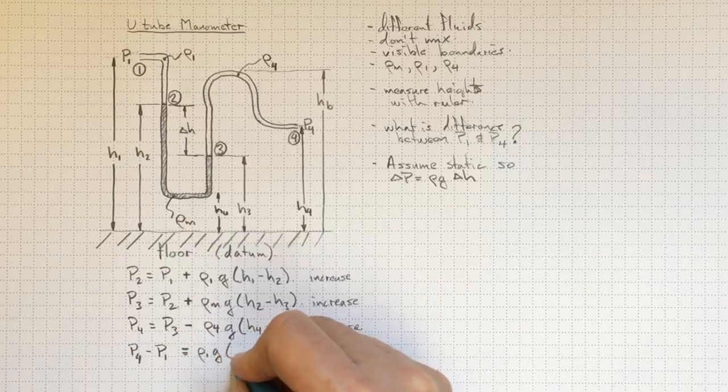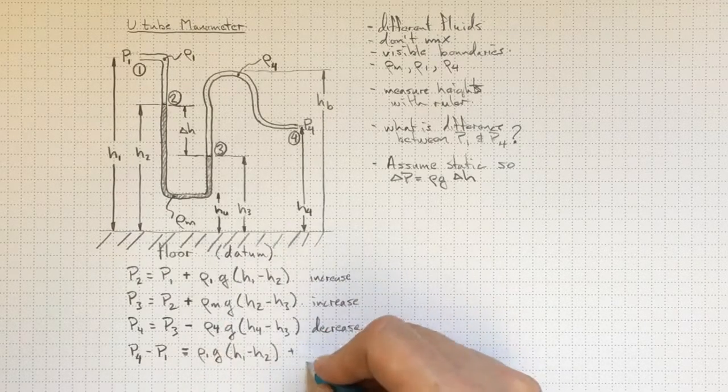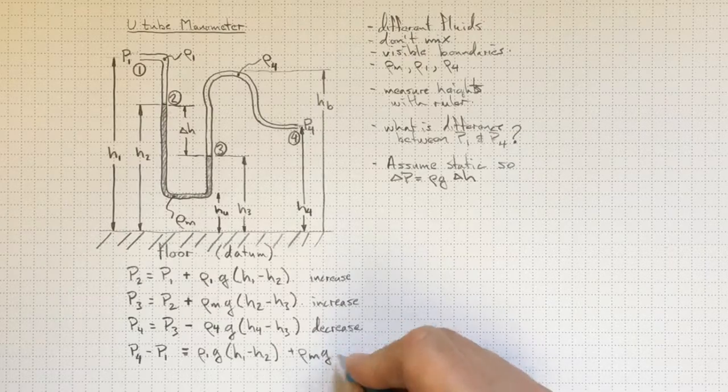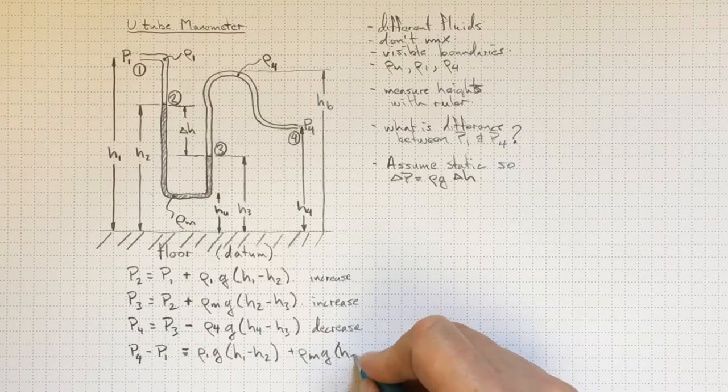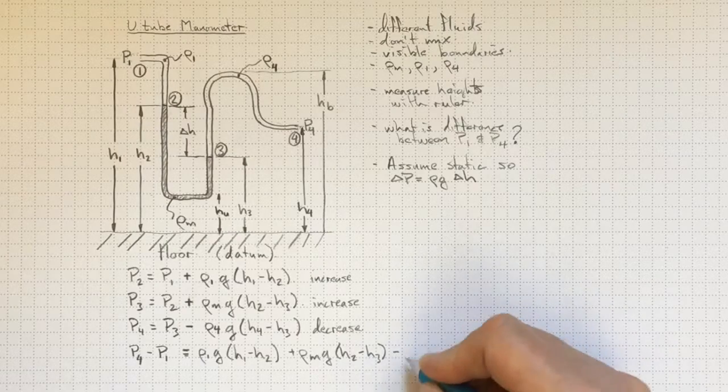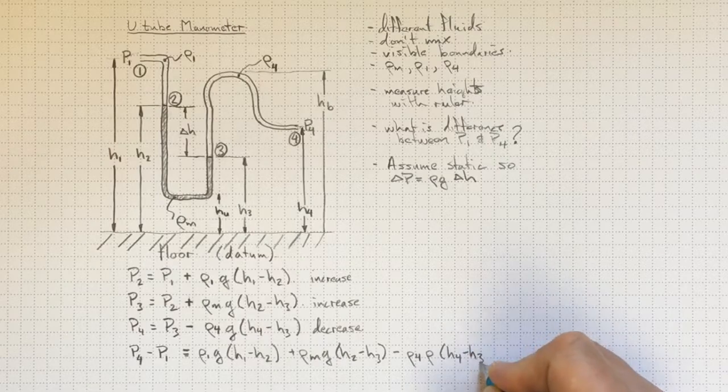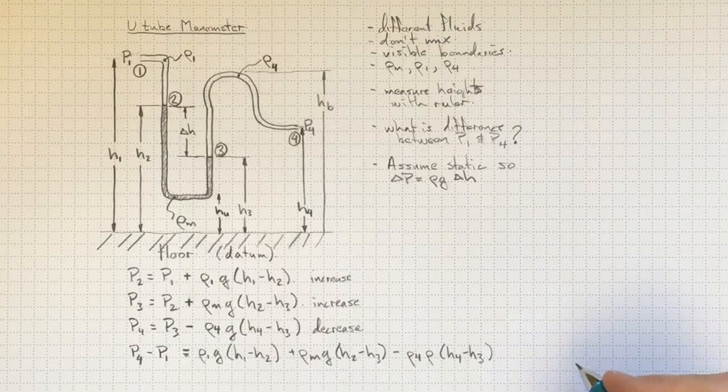So we'll have rho one, G, H1 minus H2, plus rho M, G, H2 minus H3, minus rho four, G, times H4 minus H3.